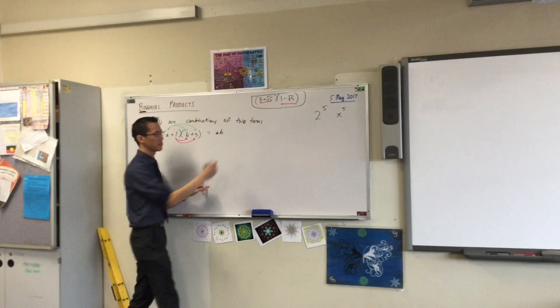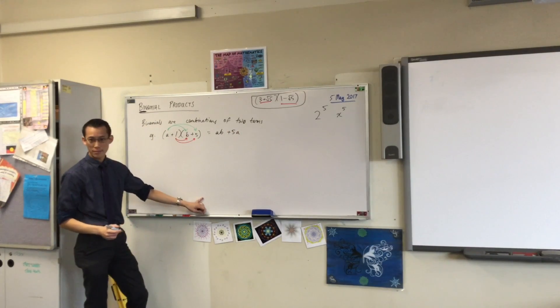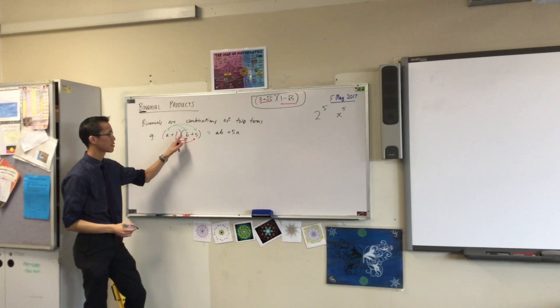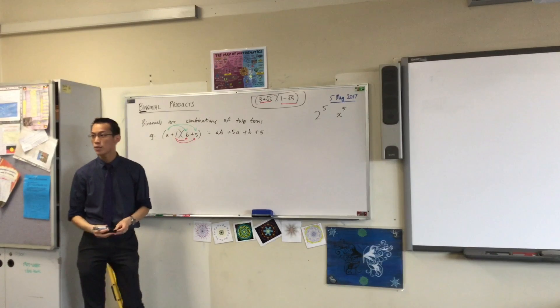A multiplied by 5, which gives you, finish it off for me, 5A, plus B, okay,